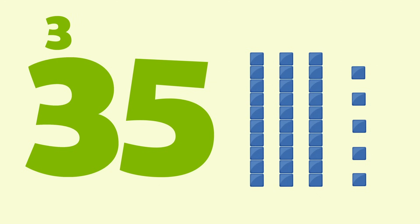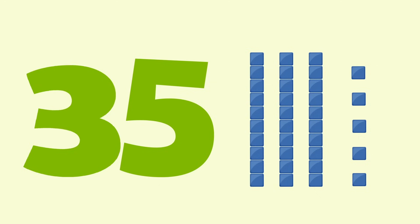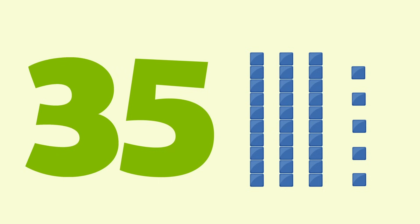Another trick you can remember is to just put a zero at the end of the number. The three in 35 is represented by the three tens blocks, which equals 30.